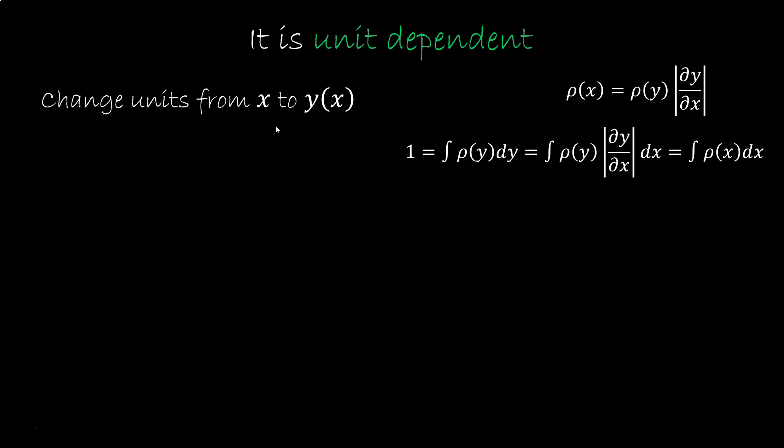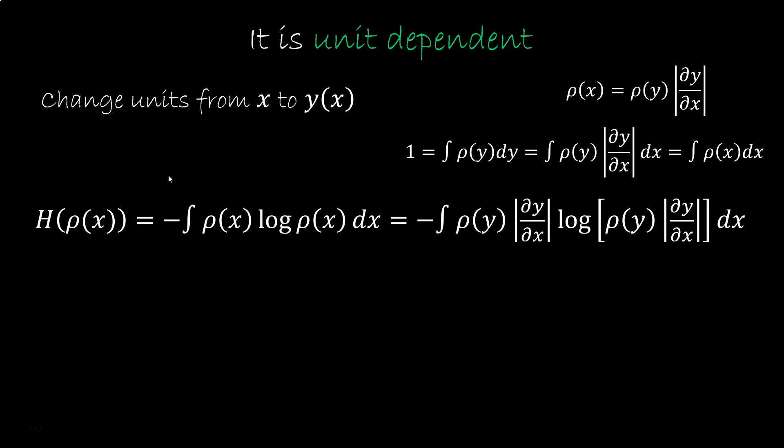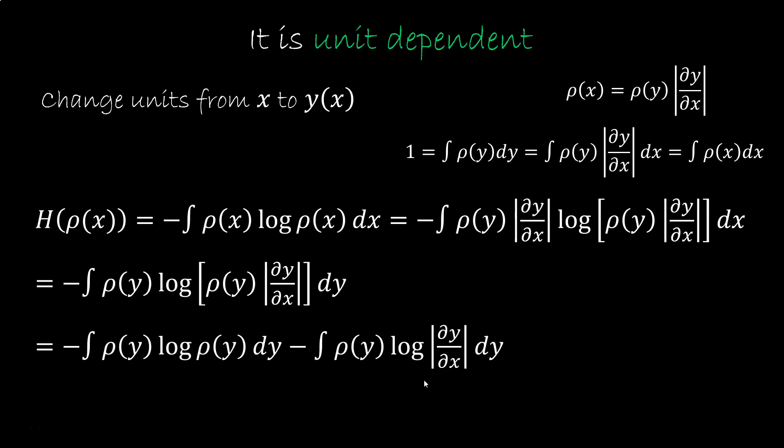To see that it is unit dependent, let's change units from x to y of x. Rho is a density, so you get a Jacobian when you change units, so that the integral remains the same. If we get the expression for the Shannon entropy, we get two Jacobians. One outside the log, and one in the log. The one outside the log combines with dx and becomes dy. The one inside the log becomes an extra term.